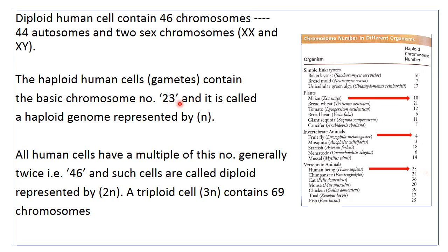The basic chromosome number N is 23 in the case of human beings, and this is called the haploid genome, represented by N. All human cells have a multiple of this number — generally every cell is diploid, so there are 2N chromosomes per cell, giving the number 46. However, certain cells are triploid or hexaploid, such as some liver cells, which may have a multiple of this basic chromosome set.